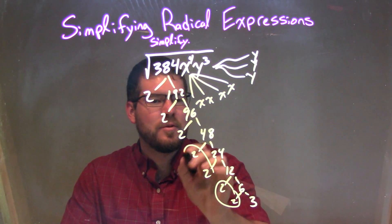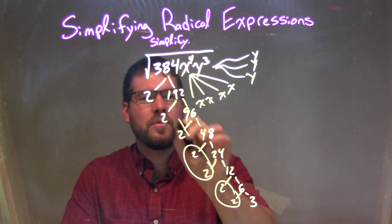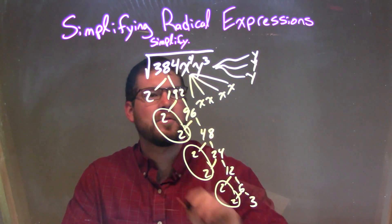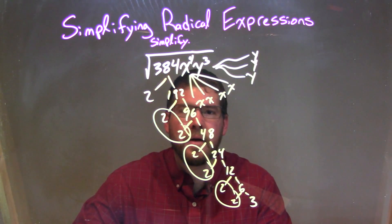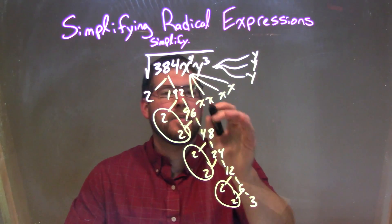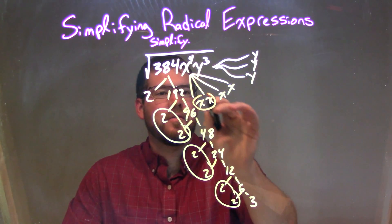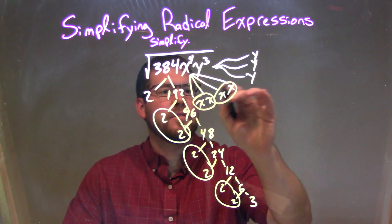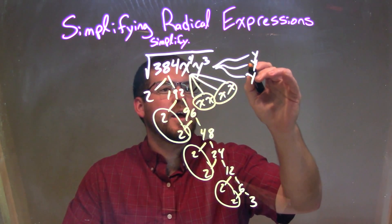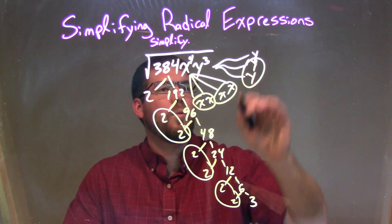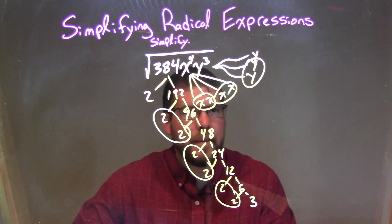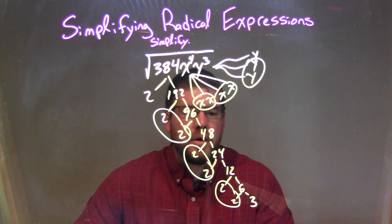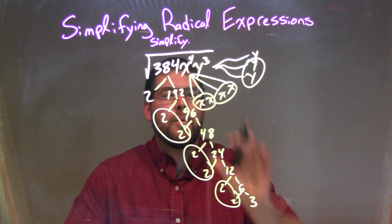We have one pair of 2's, two pairs of 2's, three pairs of 2's. Then for the x's, we have one pair of x's, two pairs of x's. And we have one pair of y's. So we write our pairs.